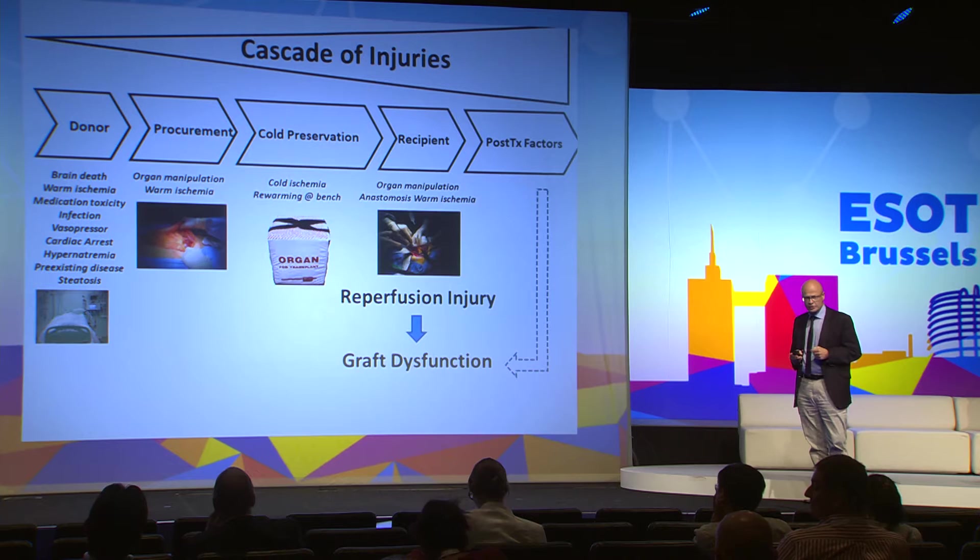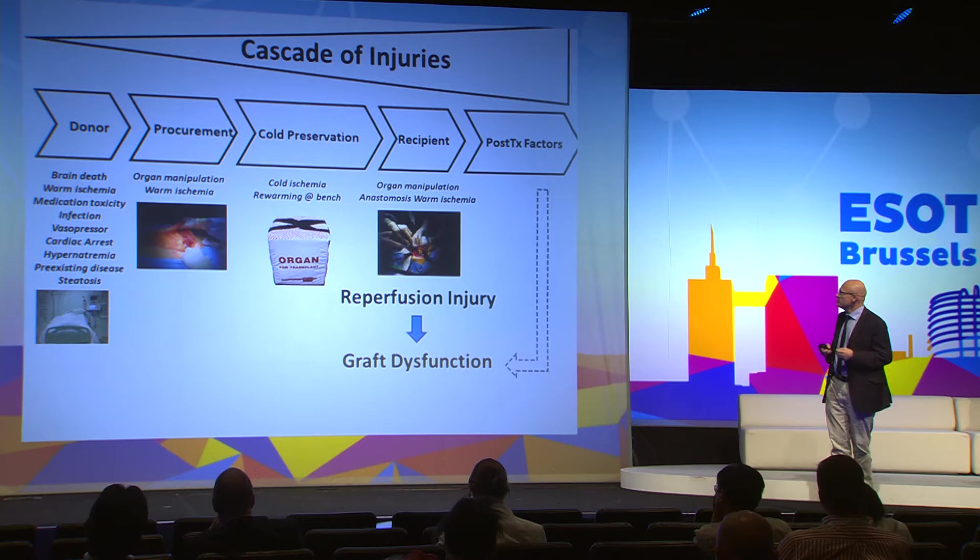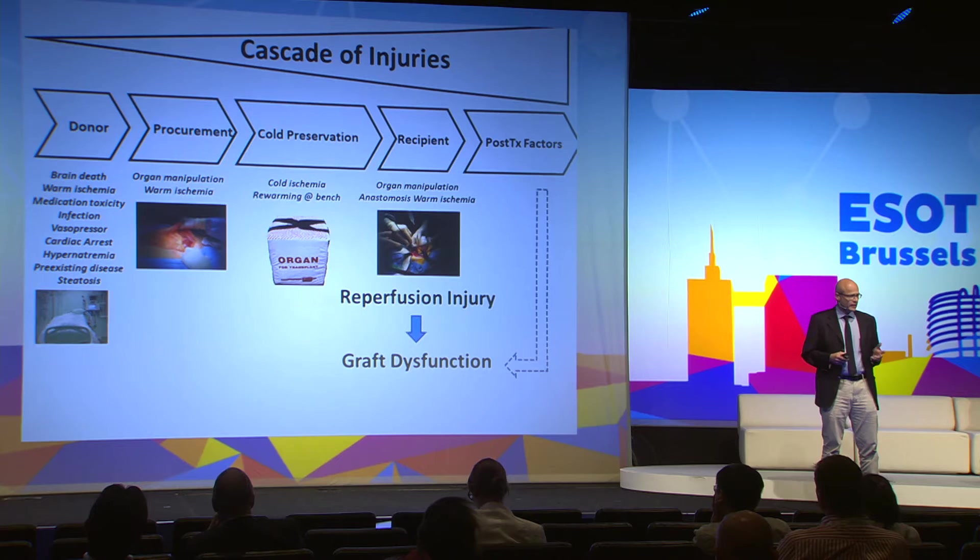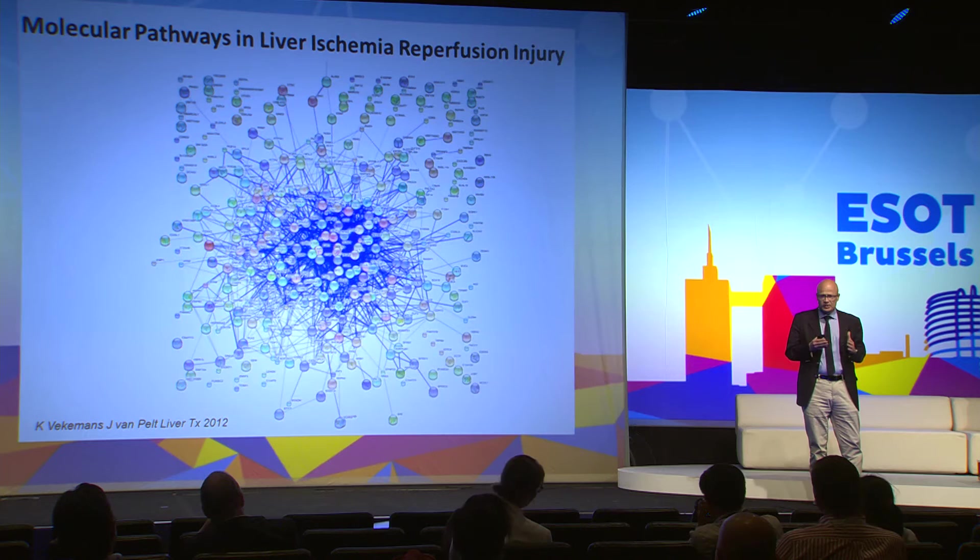Graft dysfunction is a major problem, and usually reperfusion injury is seen as a major cause of graft dysfunction. But in fact, graft dysfunction is mostly determined by injuries that precede reperfusion injury. The best proof of that is that living donors experience very little graft dysfunction because there is no preceding injury before reperfusion. Another proof is that biliary strictures — a major problem after liver transplant — are now documented to be caused by injury before reperfusion.